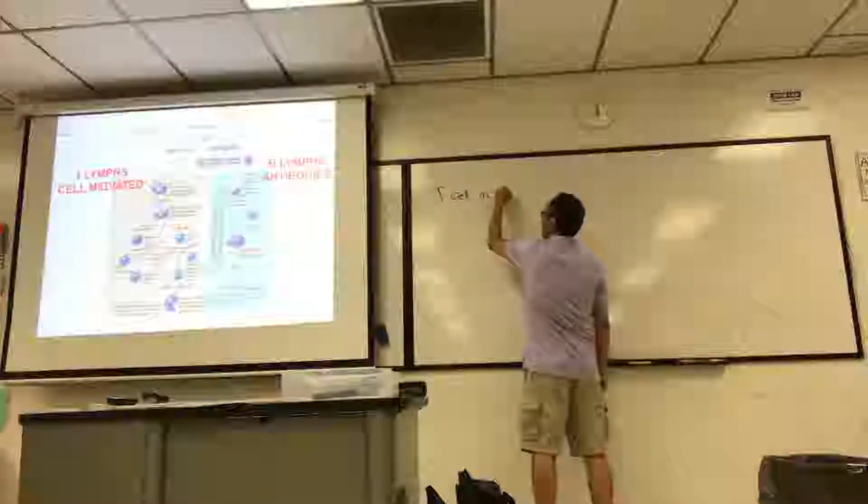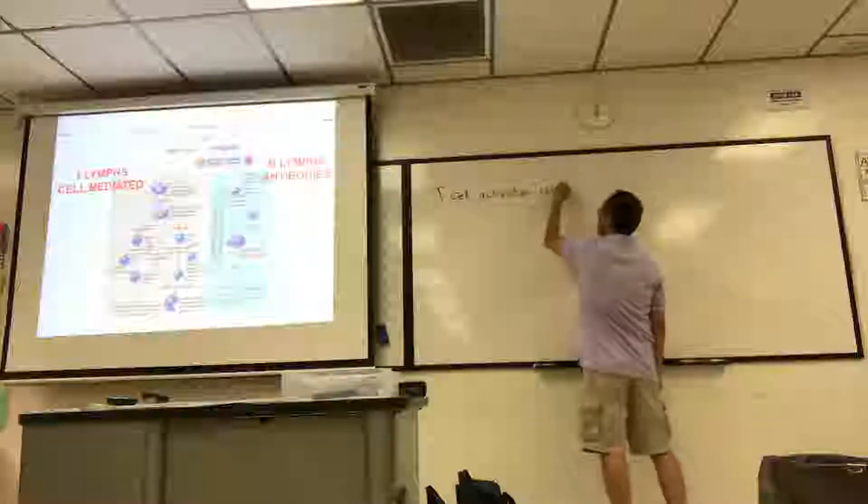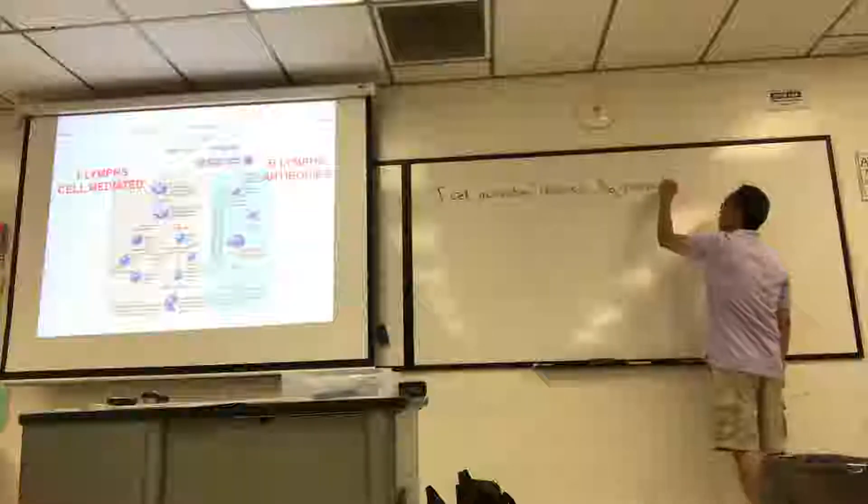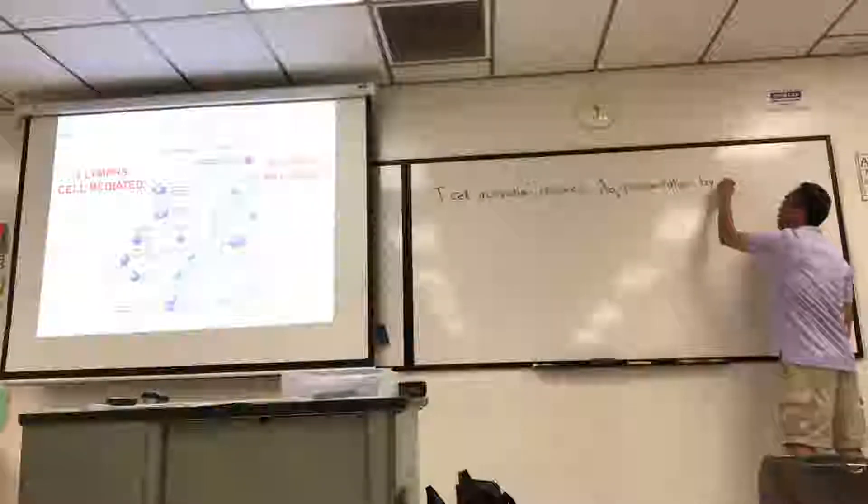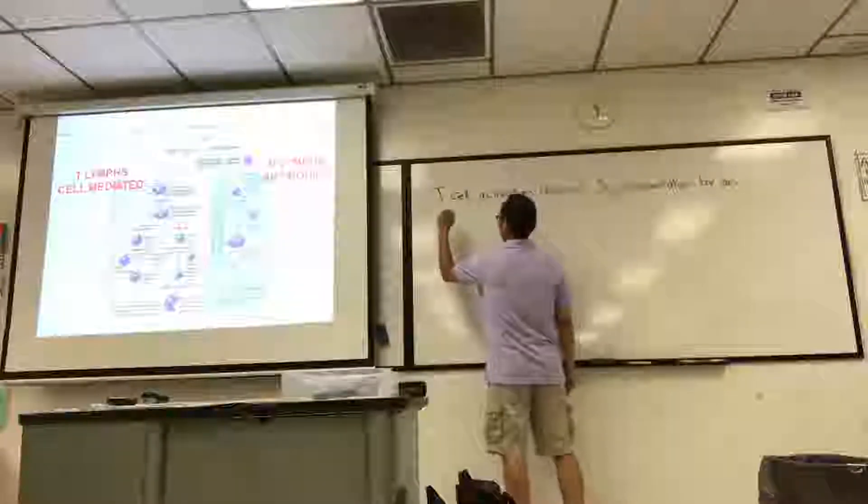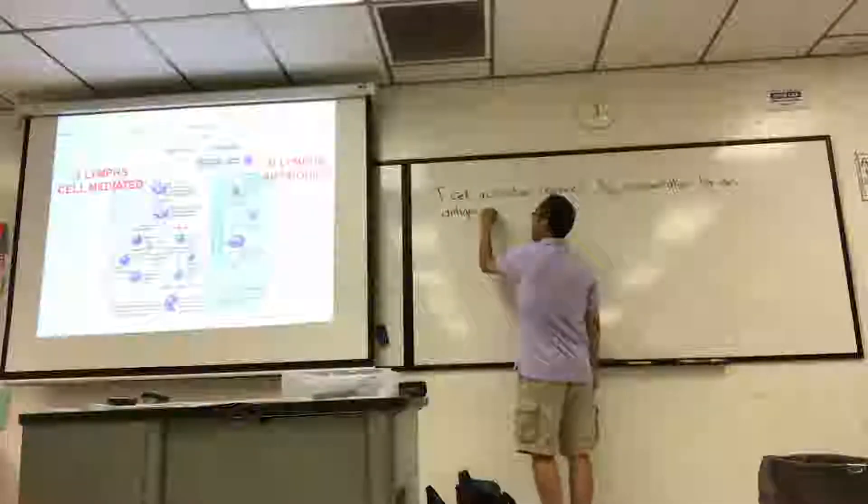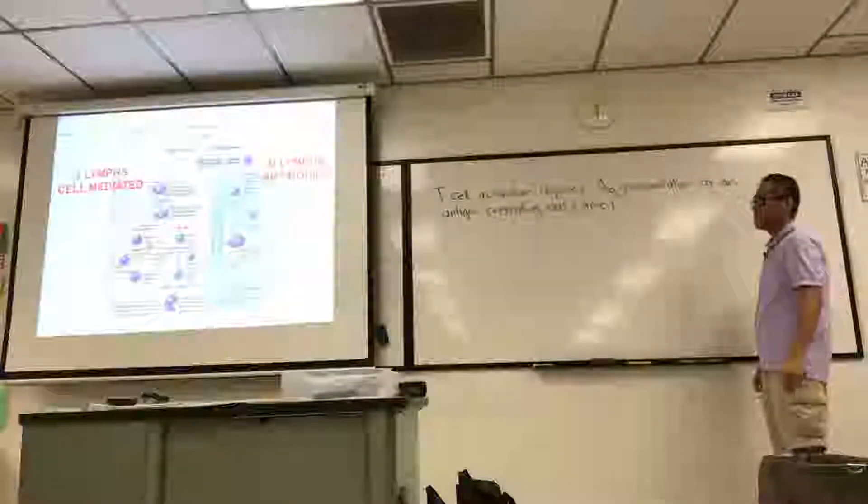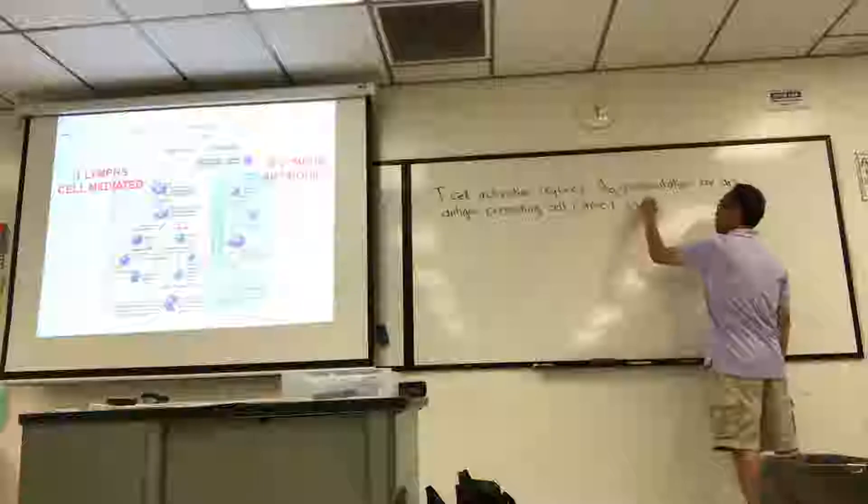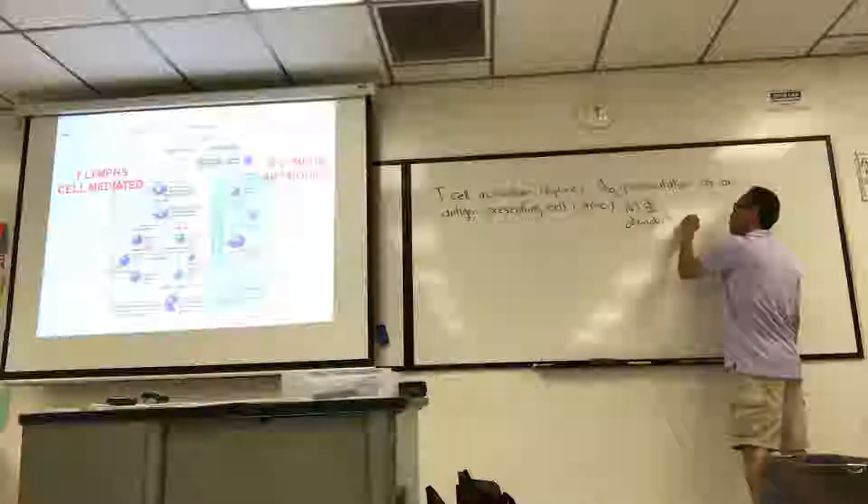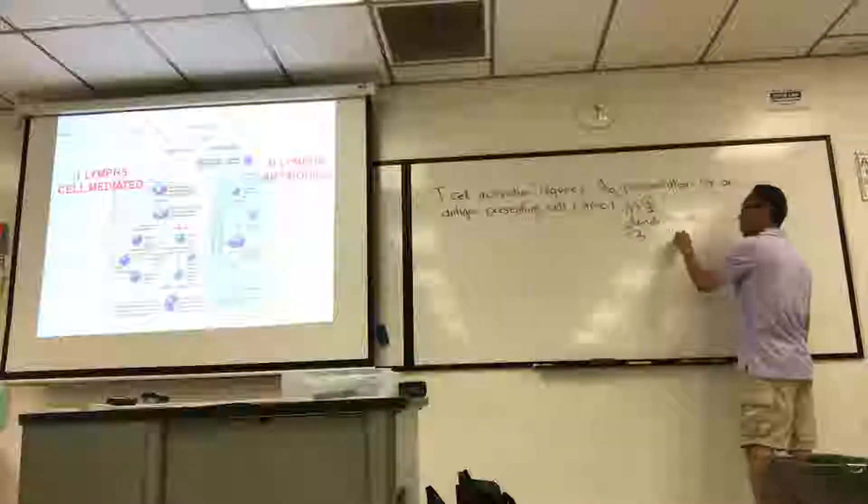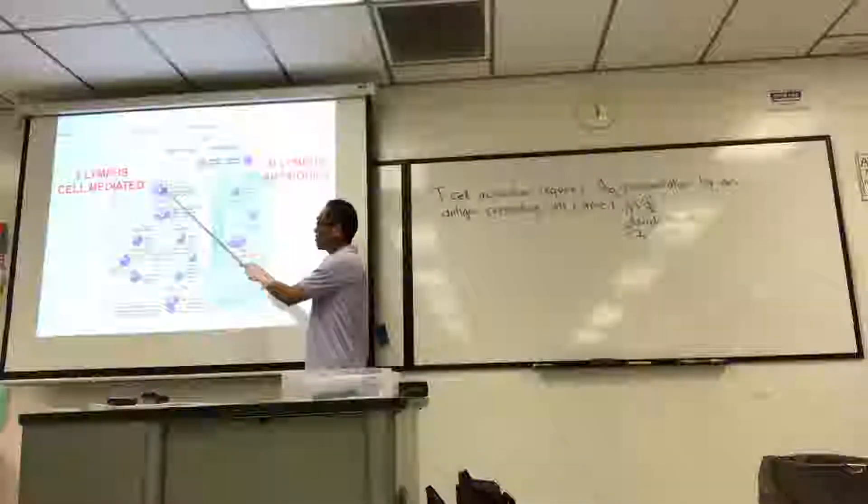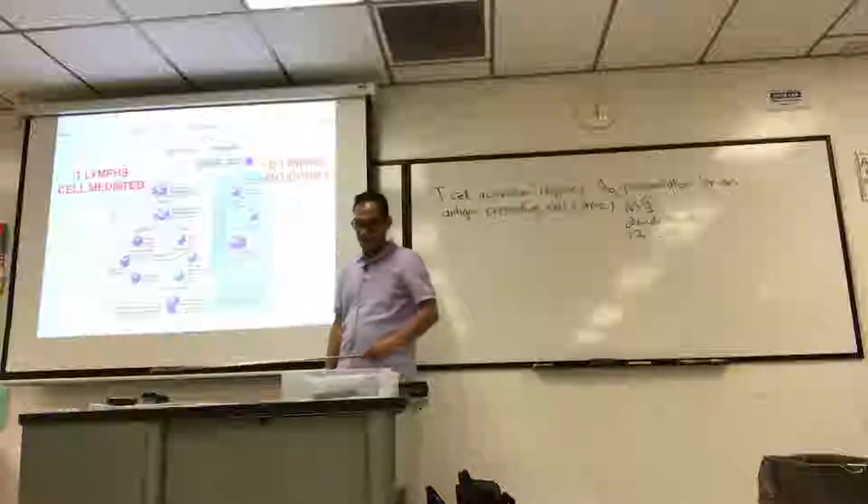T-cell activation requires antigen presentation by an antigen presenting cell, APC for short. Cells that have this APC function include macrophages, dendritic cells, and B-cells. Let's go with those three in terms of the APC function. So on the figure, it's this purple cell. They're taking a piece of the foreign invader, the antigen, and they present it and activate the different subpopulations of T-cells.